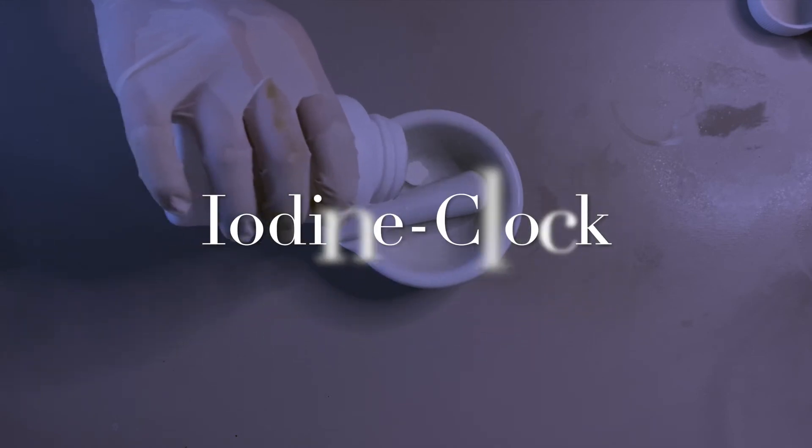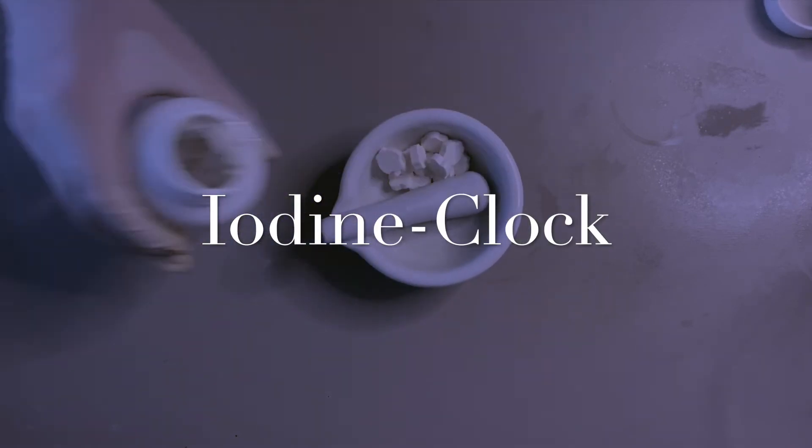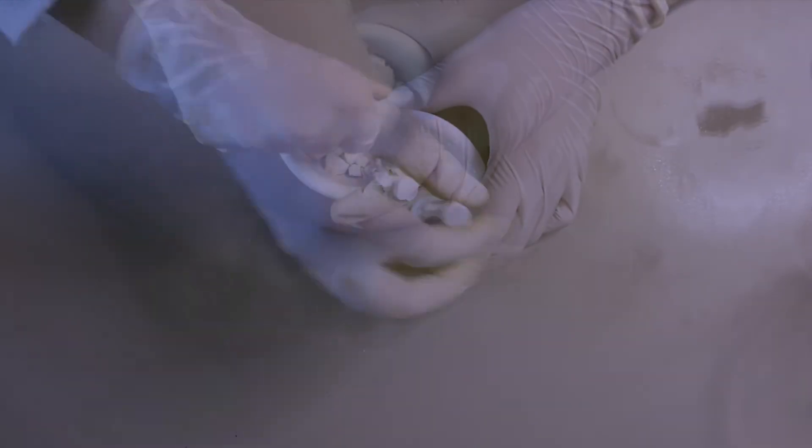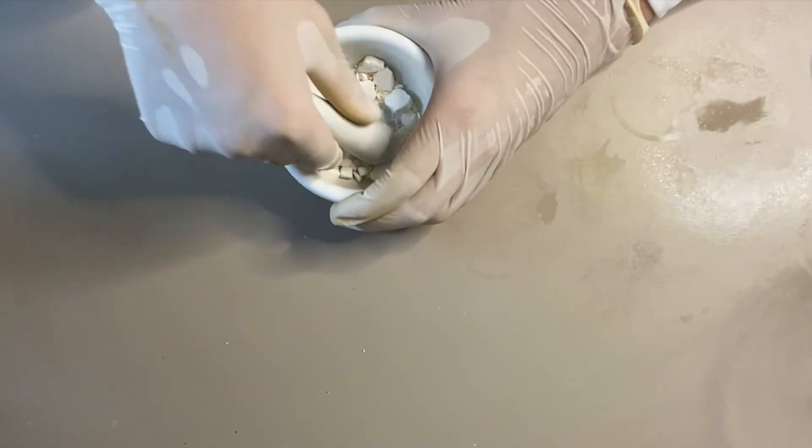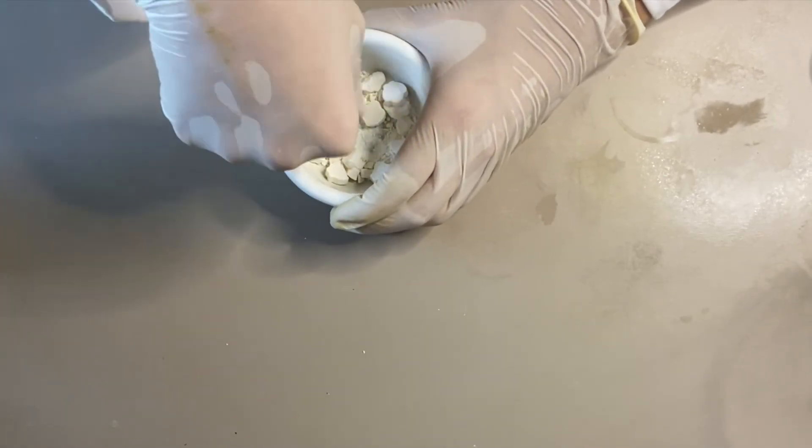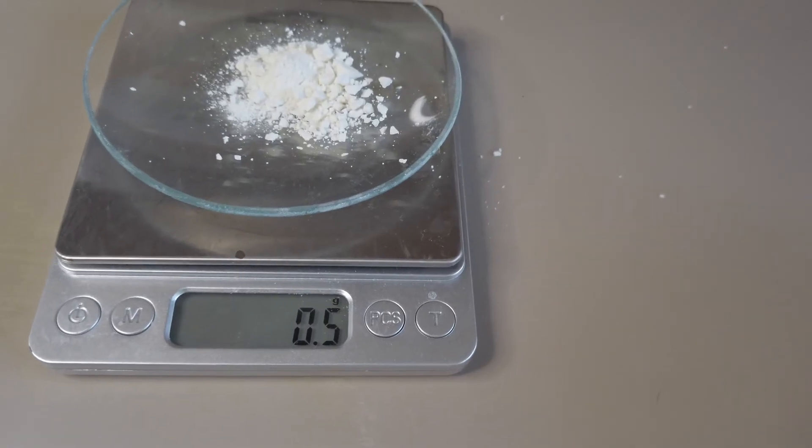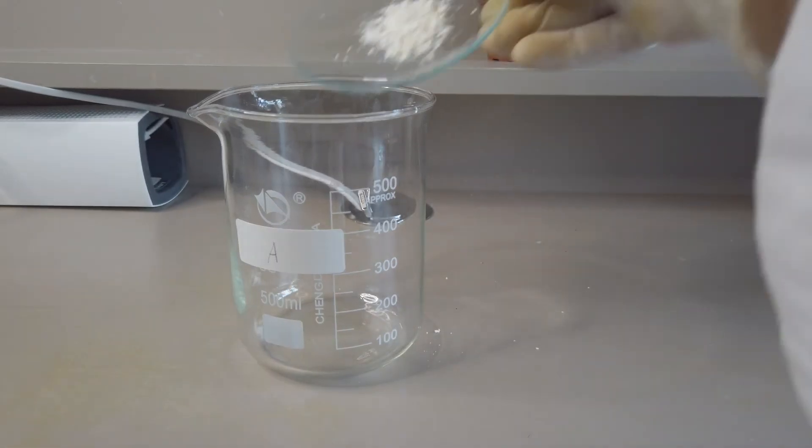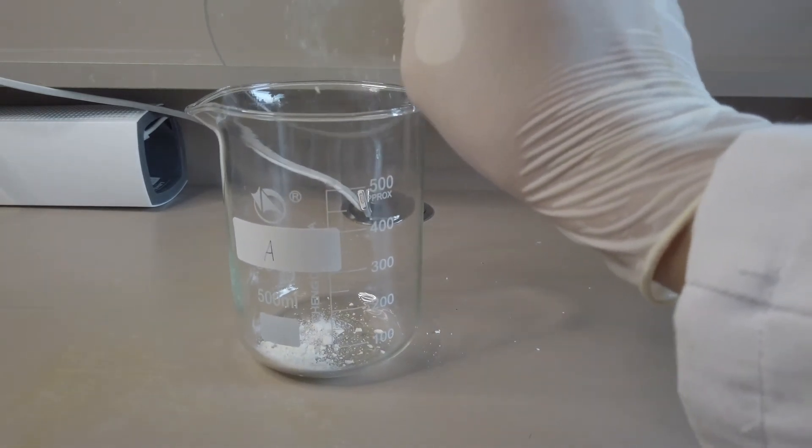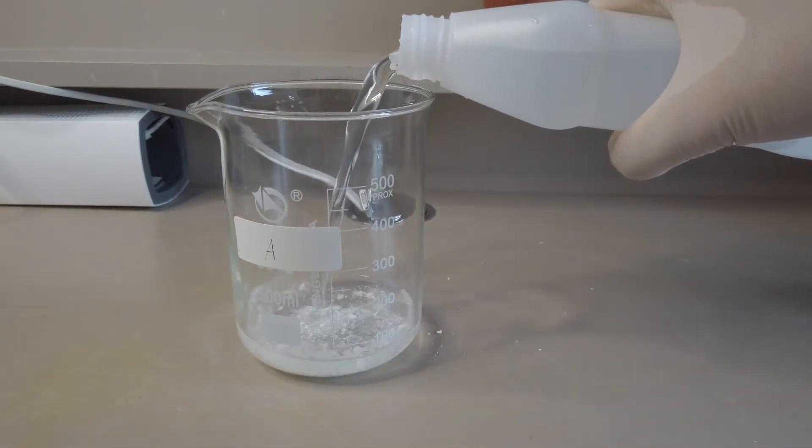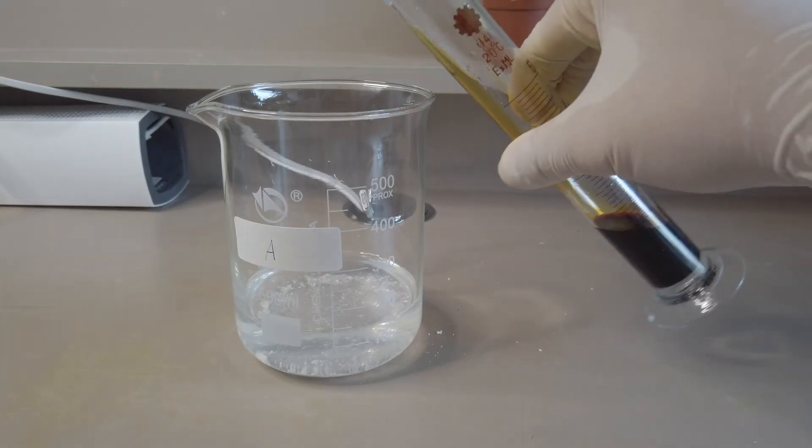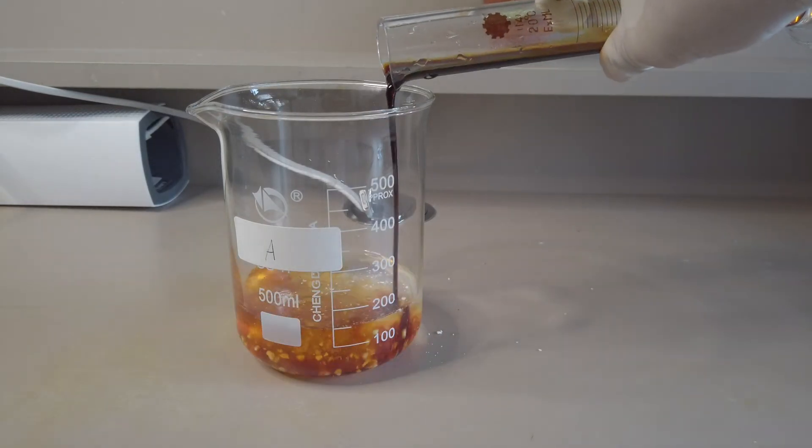Now comes our third experiment, the famous iodine clock reaction. To begin with we crushed some vitamin C tablets into powder. Then weighed out 0.5 grams of the powder. Into the first beaker the powder was made into a solution by adding 100 milliliters of distilled water. Then we added 12 milliliters of povidone iodine.